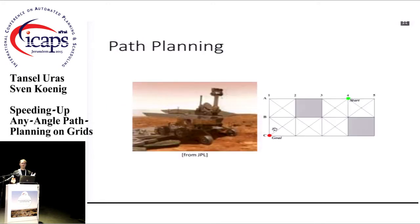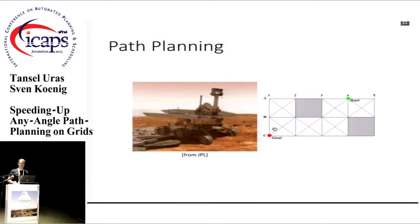The main problem we're considering is path planning. We have an environment with obstacles, a start and a goal location, and we want to find a short path between these two points that doesn't collide with obstacles. It has applications in robotics and video games, among other areas.